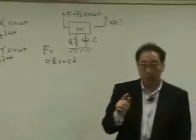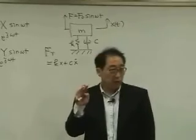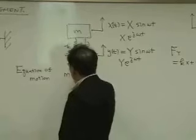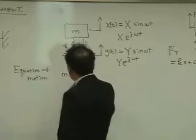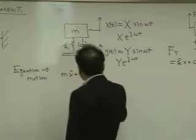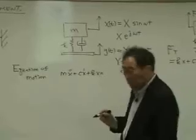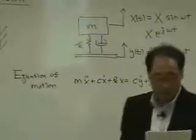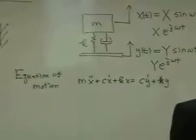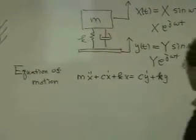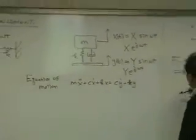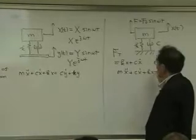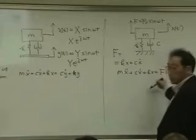To apply Newton's second law, we balance the forces on the mass. The equation of motion for the base excitation case can be written as: Mẍ + Cẋ + Kx = Cẏ + Ky. And the equation of motion for the direct force excitation case is simply: Mẍ + Cẋ + Kx = F(t), where F(t) is the excitation force.